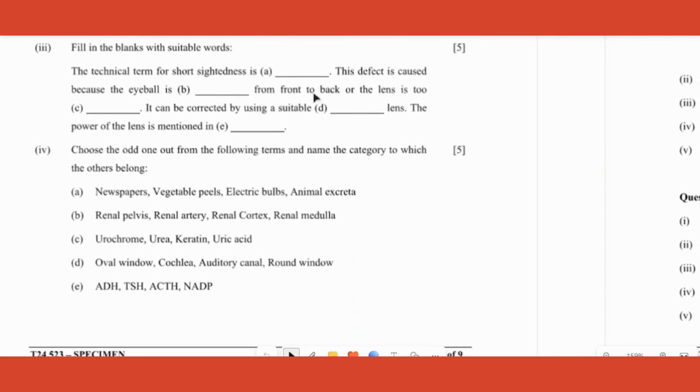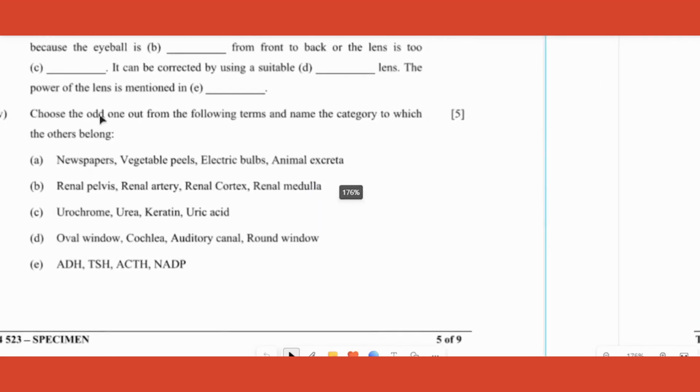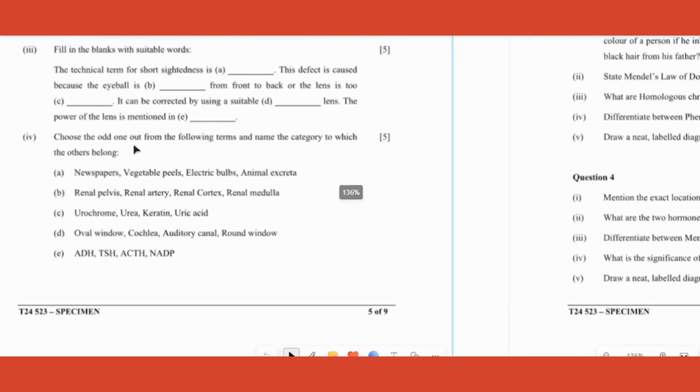Fill in the blank is self-explanatory. Choose odd one out: 1, 2, 3, 4 terms are given. In this there is a particular logic by which you have to find any one item which does not belong to the group. We do this from grade 1, so the same kind of question but in a biological way. That's called odd one out - pick the odd one out from the four terms.